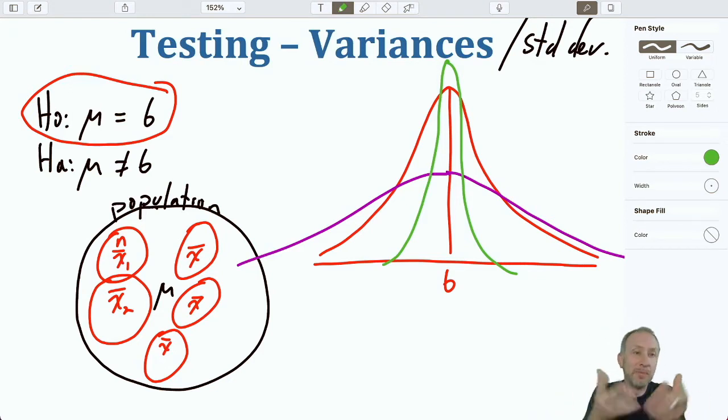If the null is in fact true, so the average is 6, we might be interested in knowing whether or not the observations are really closely packed around that average. In other words the variance is very small. Or maybe the variance is very large and the distributions are really spread out. Still has the same average but the distributions might be really spread out. That might be important to us.